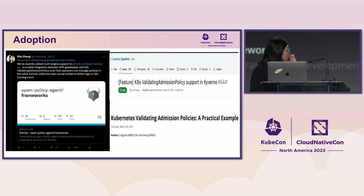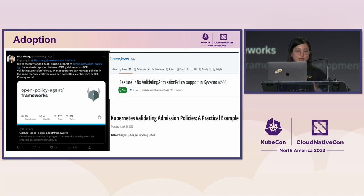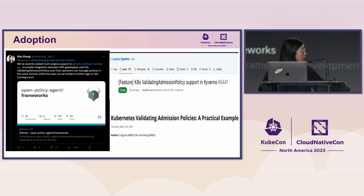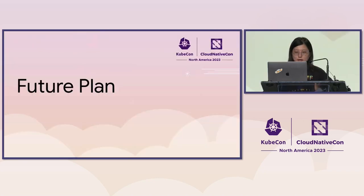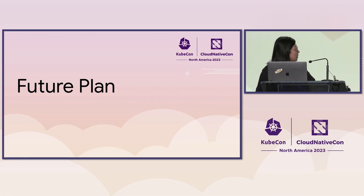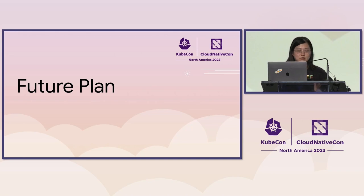The whole ecosystem has been aware of this effort. The main policy engines such as OPA Gatekeeper and Kyverno have already adopted the feature. There's so much more awesome stuff in this feature, but unfortunately I don't have enough time to cover it all. I have documentation and an earlier talk covering it in more detail. Feel free to talk to me afterward — I'm happy to share more. Now let's talk about the future plan and key takeaways.